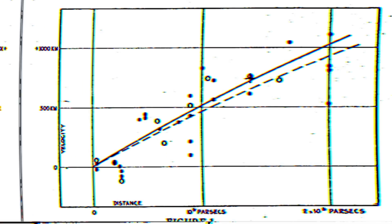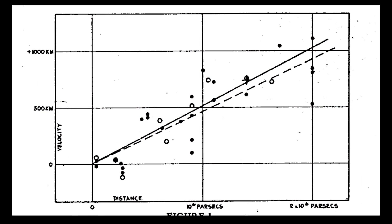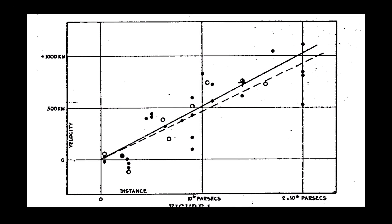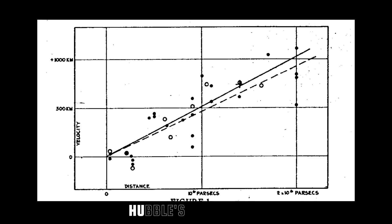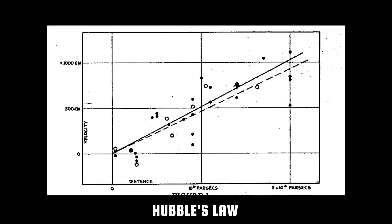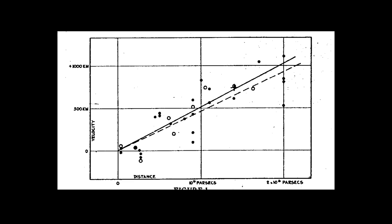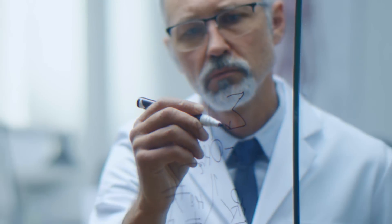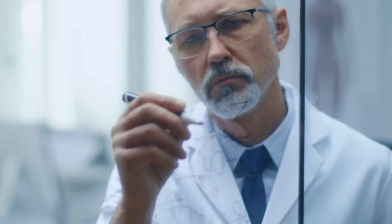This was Einstein's biggest blunder. He wrote that the introduction of a constant cosmological term in the equation of gravity has to be rejected, and that if Hubble's law had been known at that time, the cosmological constant would have never been introduced. But what scientists later found out is that the biggest blunder wasn't a real mistake.